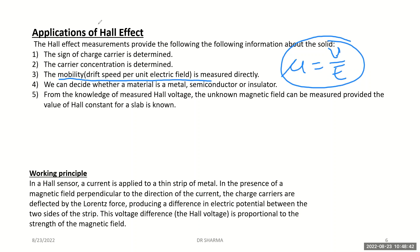Using the Hall effect, we can decide whether a material is a metal, semiconductor, or insulator. From the knowledge of the Hall voltage, an unknown magnetic field can be measured provided the Hall constant of the material is known. Many different types of Hall sensors are constructed for daily life use — for example, hand dryers in airport washrooms work on the basis of the Hall effect. Hall sensors can also be used as switches, and Hall effects can be used in heat engines to control the working of the crankshaft and camshaft.